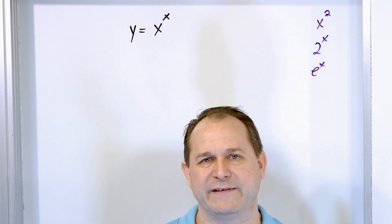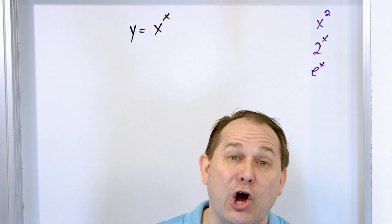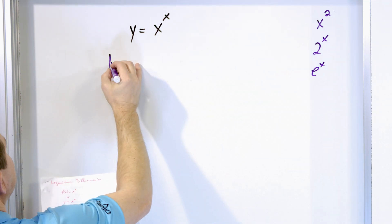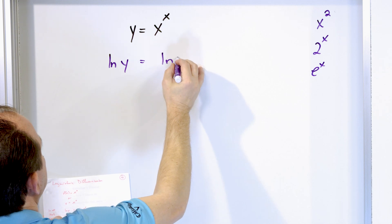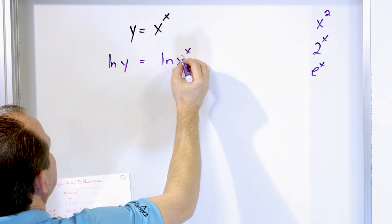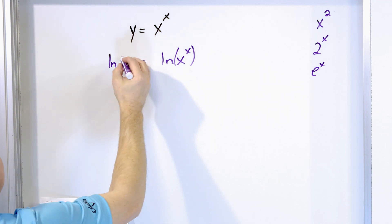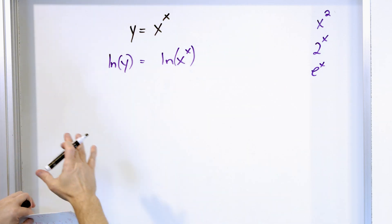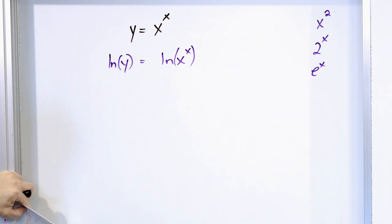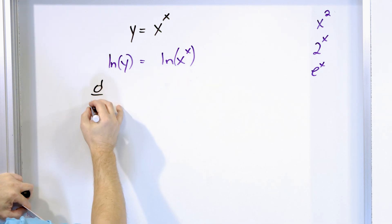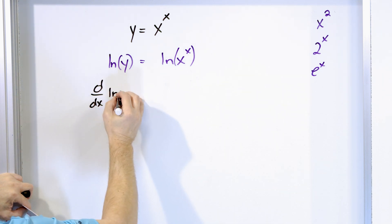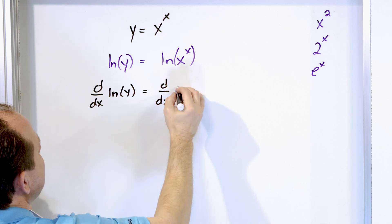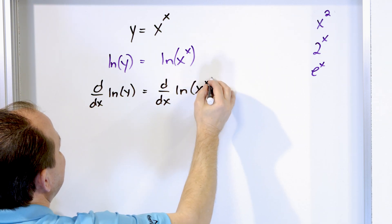We're allowed to do whatever we want to both sides of an equation. In this case, we're going to take the natural logarithm of both sides, and the equation is still valid. On the left we'll have the natural log of y, and on the right we'll have the natural log of x^x. We can also take derivatives of both sides of an equation and it remains balanced. So we take d/dx of natural log of y, and on the right-hand side d/dx of natural log of x^x.